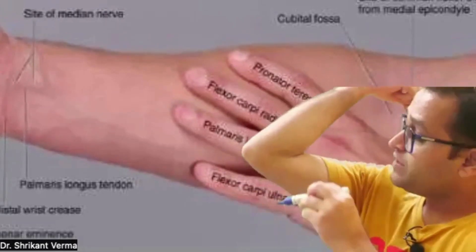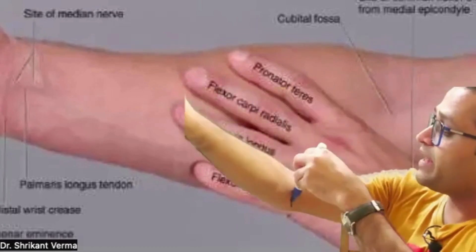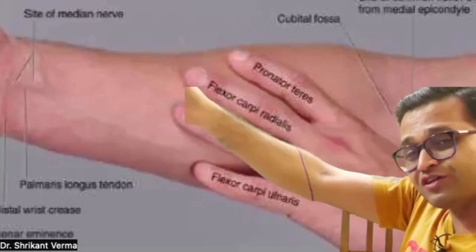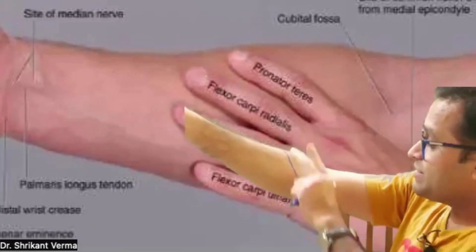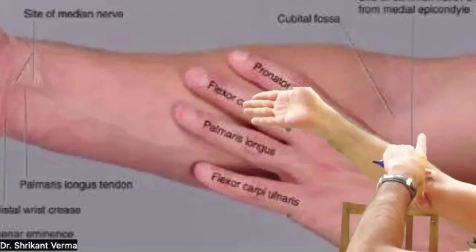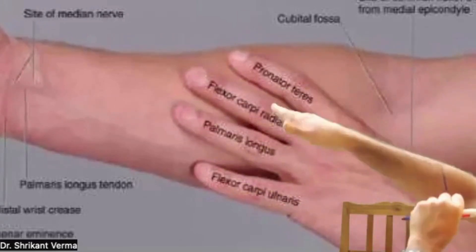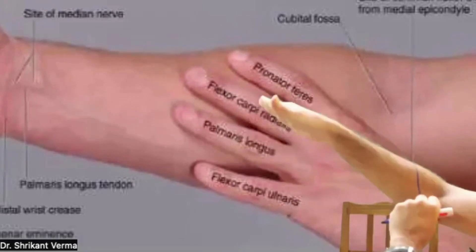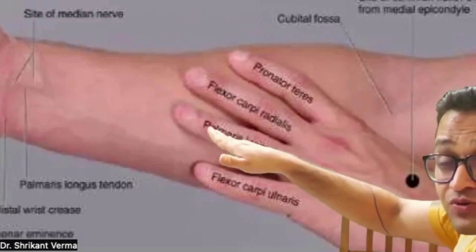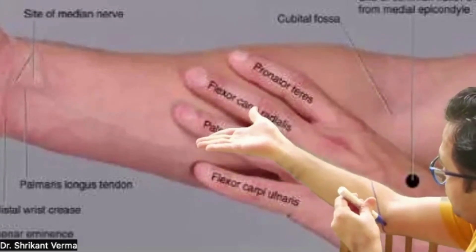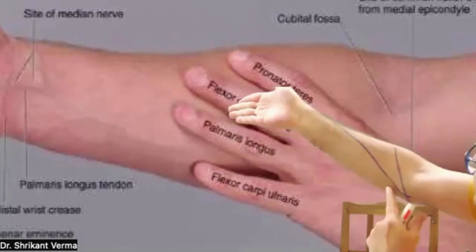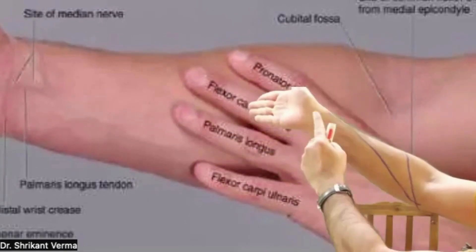The first muscle is taking origin from the medial epicondyle and running towards the radius — enjoy the anatomy in your own body. It is causing pronation, so this is the pronator. It is rounded in appearance, that's why it's called teres — pronator teres.